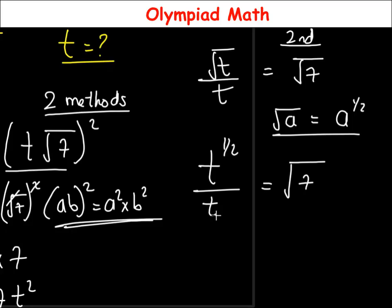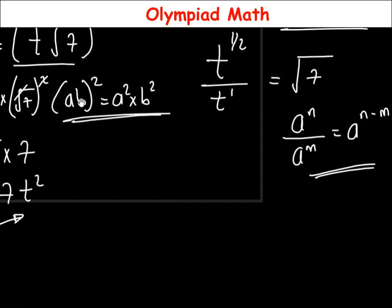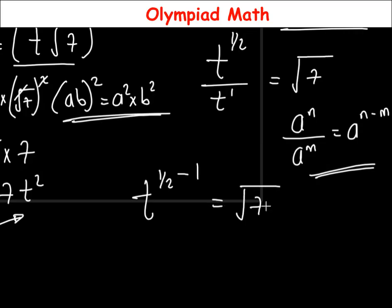This t on the denominator has a power of 1. There is a rule that a^n over a^m equals a^(n − m). Applying this, t^(1/2) over t^1 becomes t raised to the power of one-half minus 1, which is equal to √7.